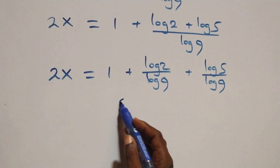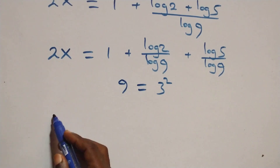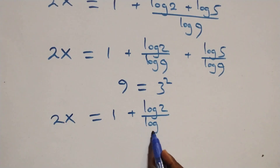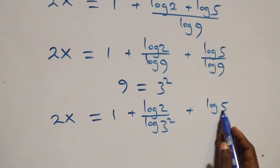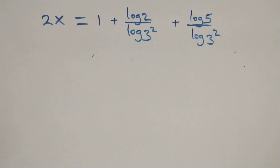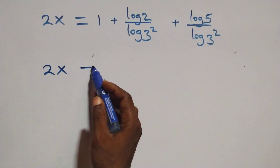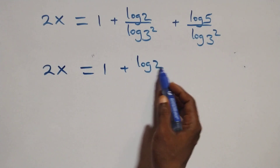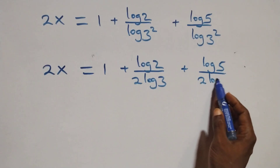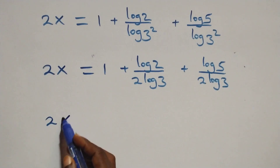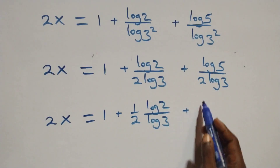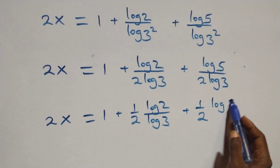We write 9 as 3 times 3, that is 3 squared. So we have 2x equals 1 plus log 2 over log 3 squared plus log 5 over log 3 squared. Applying the power rule, log 3 squared equals 2 log 3, giving us 2x equals 1 plus 1 over 2 times log 2 over log 3 plus 1 over 2 times log 5 over log 3.